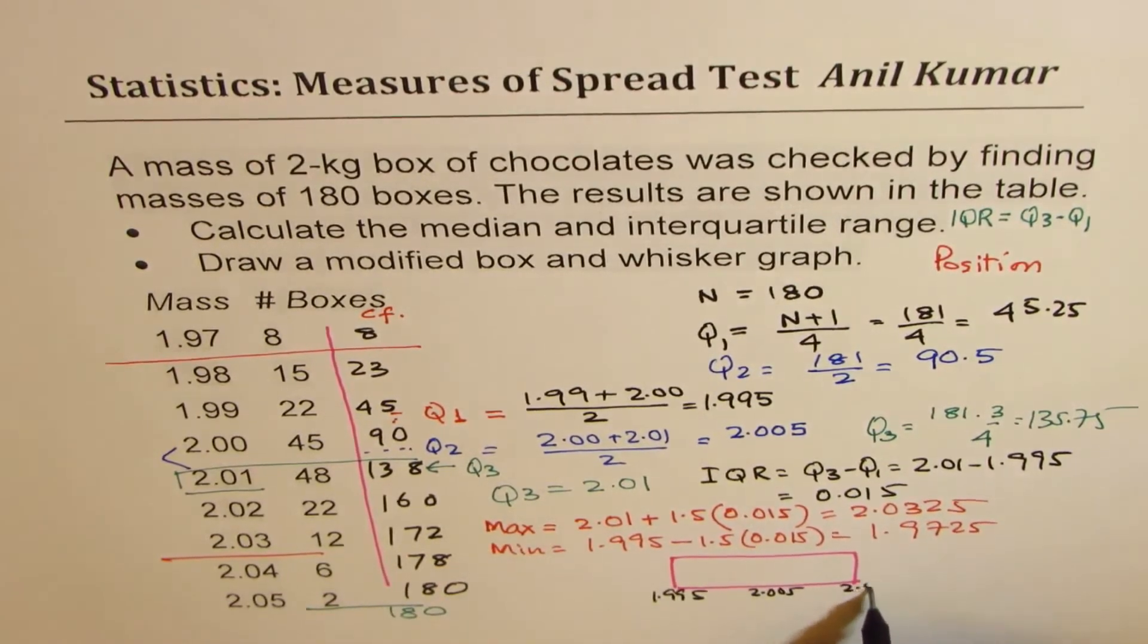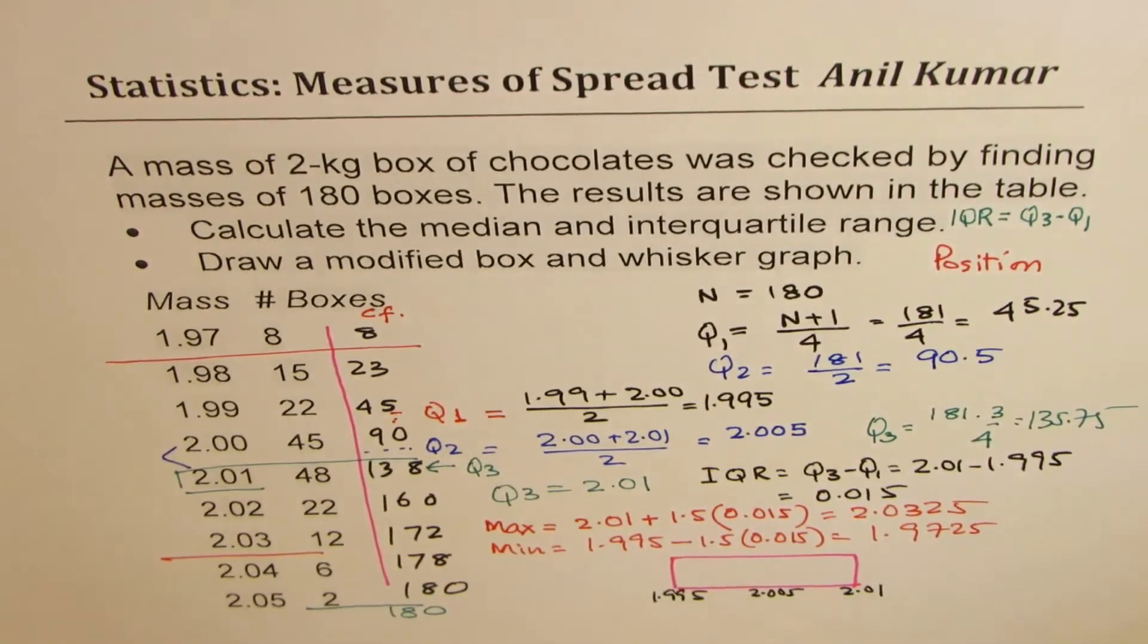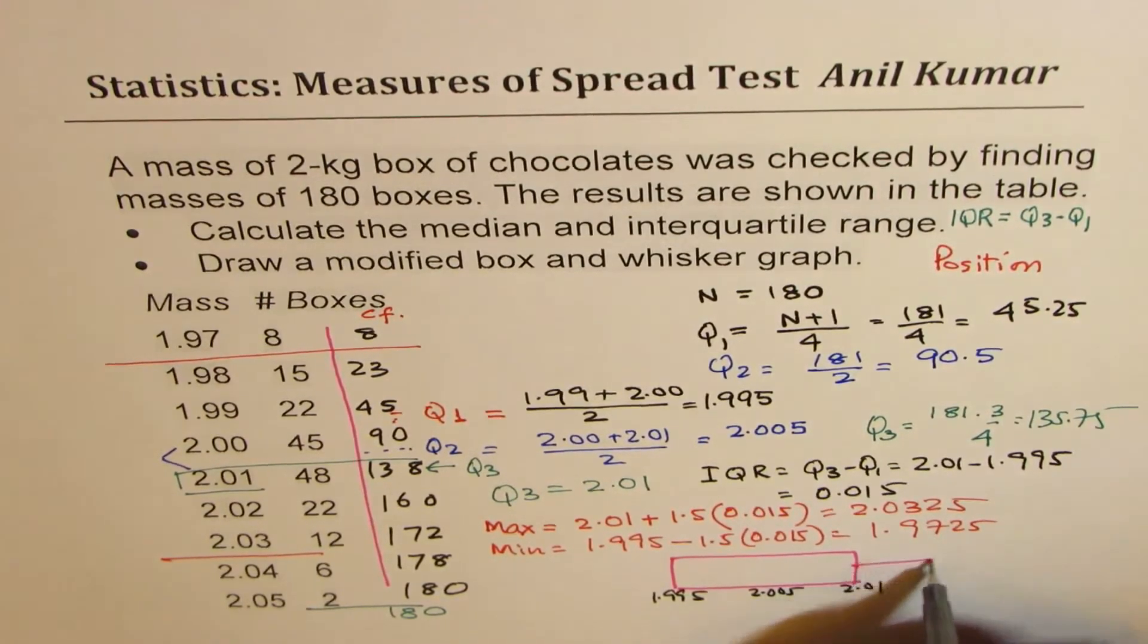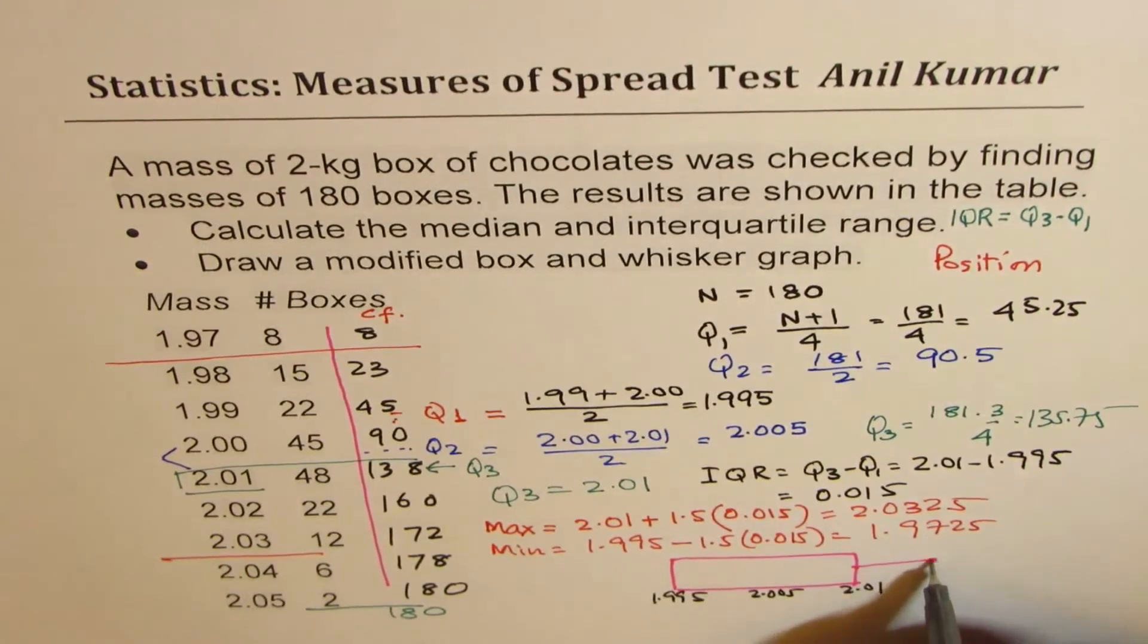Q3 is 2.01, and on this side you could go a maximum of 2.03.